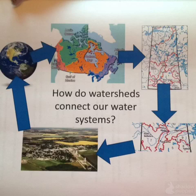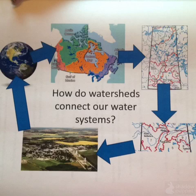Watersheds can be traced from globally to continentally to provincially to locally, and finally down to a specific town or area of land.